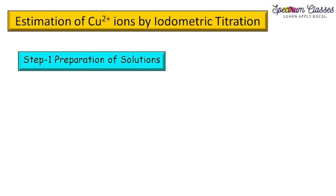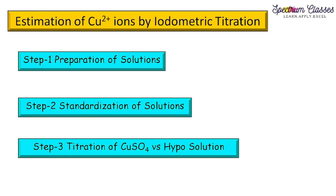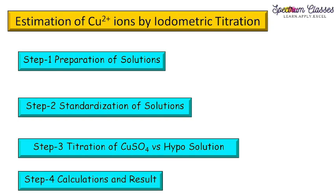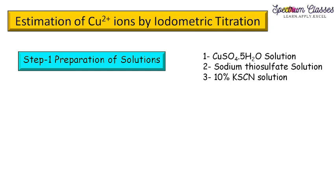This video is divided into four different steps. First is preparation of solution, second is standardization of solution, third is titration of copper sulfate versus sodium thiosulfate solution (hypo solution), and the fourth step is calculations and results. In the first step, preparation of solution, we are going to prepare copper sulfate solution.